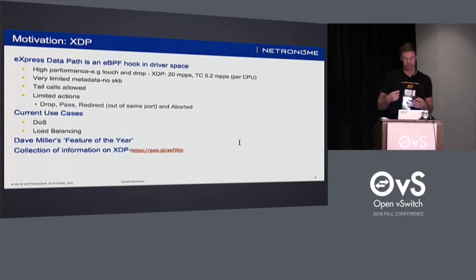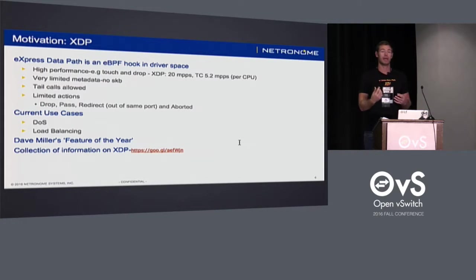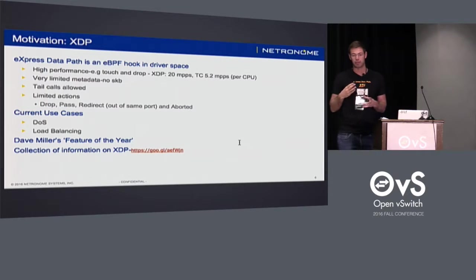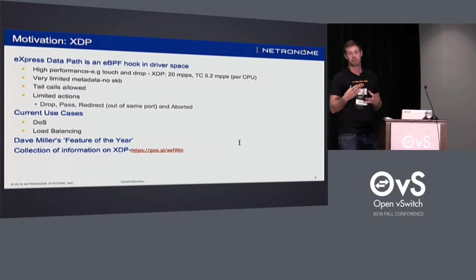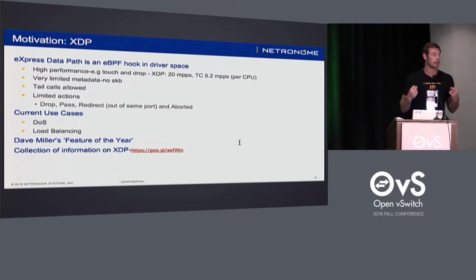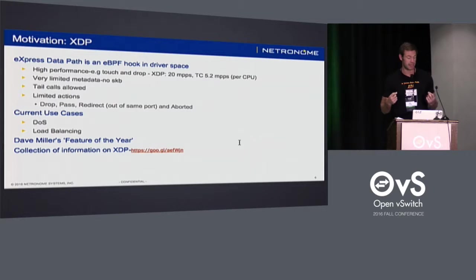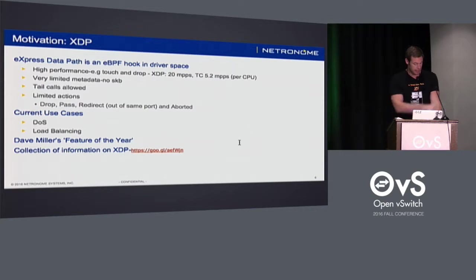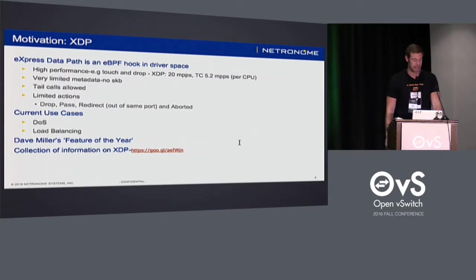We have some very simple actions — really all we can do is drop or pass. That means there's potential in the future for improving things like OVS DDoS protection and handling, because this is actually one of the use cases XDP is already being used for today. This is actually Dave Miller's feature of the year — I'd encourage you all to go and check out his keynote from netdev a few weeks ago. There's a link with lots of information about XDP.